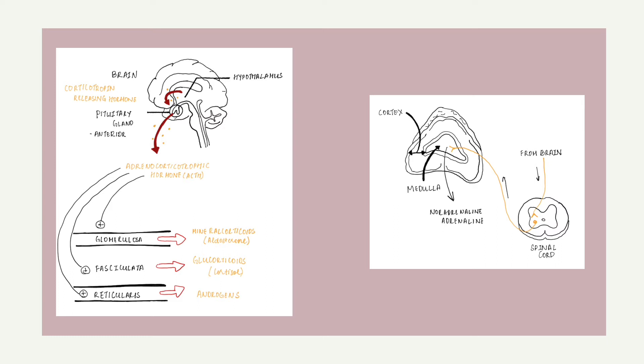Zona reticularis produces the third class of hormones known as sex steroids or sex hormones. As we can see in the second picture, the hormones of the adrenal medulla are released after the sympathetic nervous system is stimulated, which occurs when you're stressed. The adrenal medulla helps you deal with physical and emotional stress. You may be familiar with the fight-or-flight response, a process initiated by the sympathetic nervous system when your body encounters a threatening or stressful situation. Hormones produced by the adrenal medulla are epinephrine and norepinephrine.